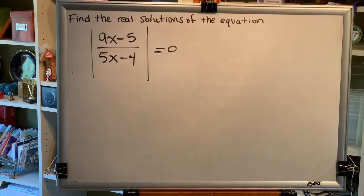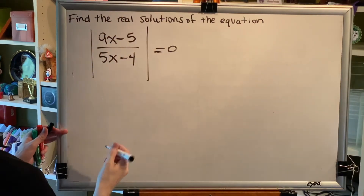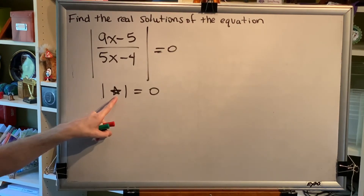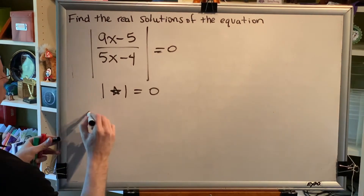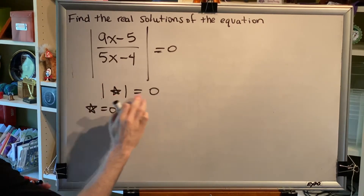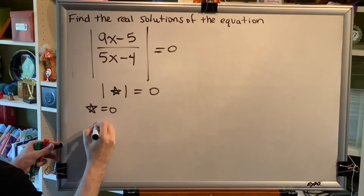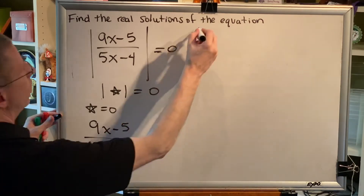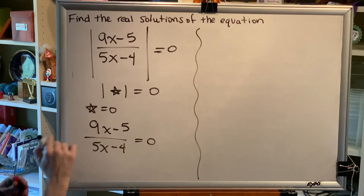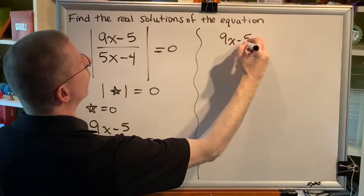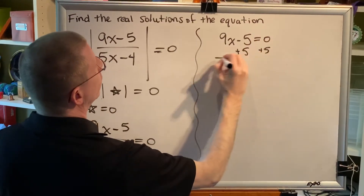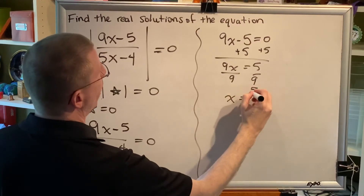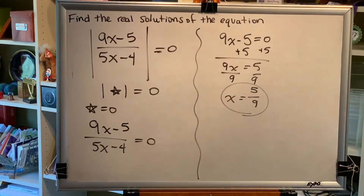Let's solve this problem. We replace the expression inside the absolute value bars with 'star' and ask what value makes this true. The answer is 0, because only the absolute value of 0 gives us 0. In this problem, star was the entire fraction, so (9x minus 5) over (5x minus 4) has to equal 0. Since the only way a fraction equals 0 is if its numerator equals 0, we get 9x minus 5 equals 0. Adding 5 on both sides gives 9x equals 5, and dividing by 9 gives x equals 5/9, our final answer.